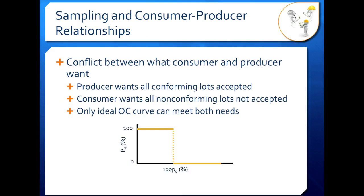In sampling, there's a consumer-producer relationship, and unfortunately this involves a conflict between what the consumer wants and what the producer wants. Think about a batch of food product. If you're the producer, you want all the conforming lots accepted — you don't want to throw out any good product by mistake based on what your sample is telling you. If you're a consumer, you want your product coming in to be as perfect as possible, so you want all non-conforming lots rejected regardless of how many conforming lots are not accepted along with that.